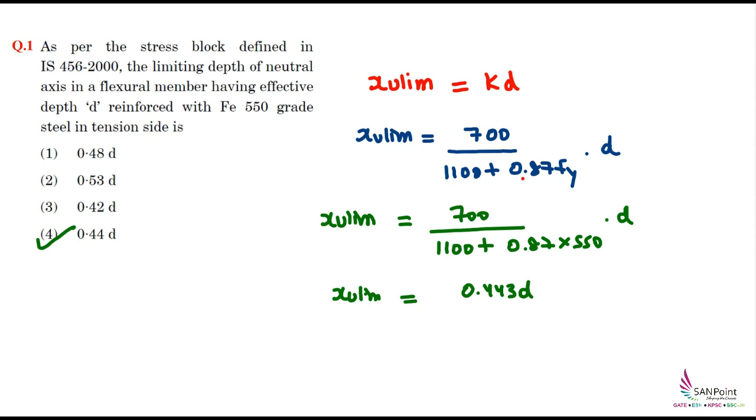Suppose if the grade was different - Fe415, Fe500, or Fe250, we can calculate accordingly. I'm writing the values for various grades of steel. For Fe250, the K value is 0.53. For Fe415, it's 0.48. For Fe500, it's 0.46. And for Fe550, the value is 0.44. You can remember this table, it will be quite handy when solving these numericals in the exam.